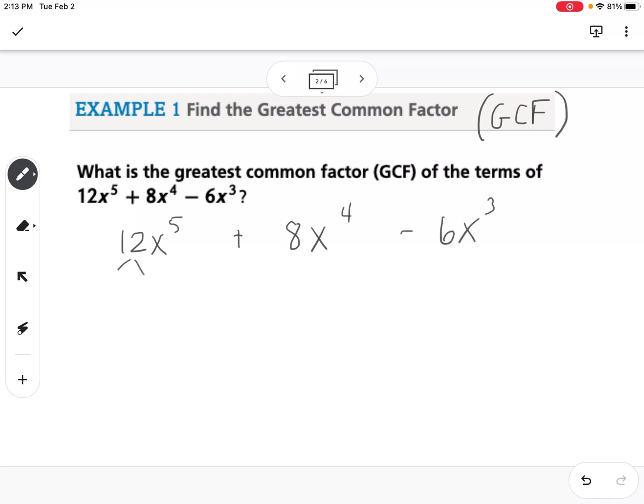I'm going to factor tree 12, so I know 12 is 3 times 4, and 4 is 2 times 2. So I take these factors and I write them out, 3 times 2 times 2, and then there's 5 x's. So I'm going to write 1, 2, 3, 4, 5.